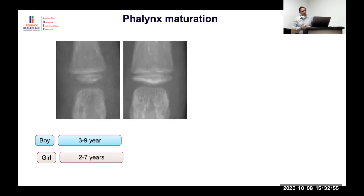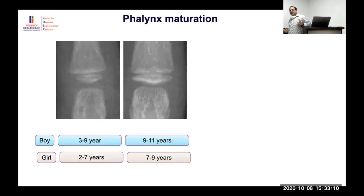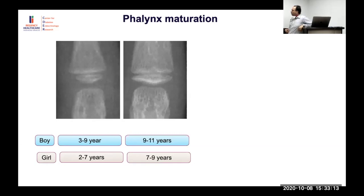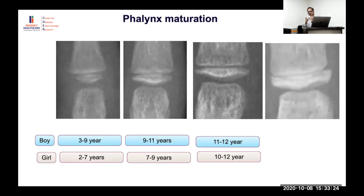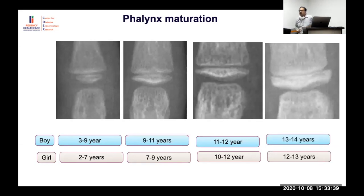When the epiphysis becomes as big as the metaphysis, this is approximately seven to nine years in girls and nine to eleven years in boys. When it becomes bigger, this is around ten to twelve years in girls and eleven to thirteen years in boys. Once capping starts — the epiphysis grows beyond the metaphysis and wraps around it — this is approximately twelve to fourteen years, signaling limited remaining growth potential.